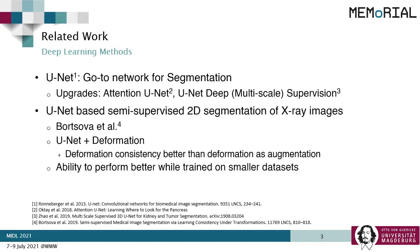Among the various deep learning models, UNET and its flavors like Attention UNET and UNET with deep supervision have been the go-to networks for segmentation. Mostover et al. proposed a semi-supervised model based on UNET for 2D segmentation of X-ray images, which handles the problem of small datasets really well. This work shows that deformation consistency is better than using deformation as an augmentation step.